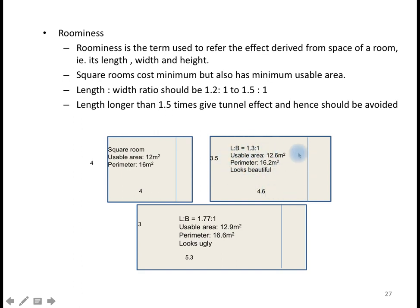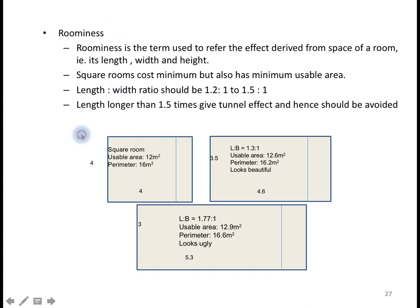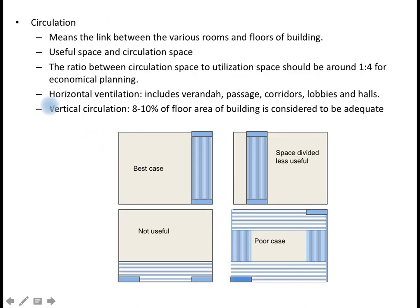It doesn't mean that increasing the length always increases the usable area. For example, a room of 5.3 meters length and 3 meters width increases usable area but creates a tunneling effect — it looks like you are entering a tunnel. That seems unpleasant from a roominess perspective. So the ratio of the height, length, and breadth of the room defines roominess.